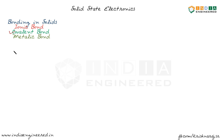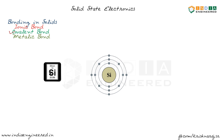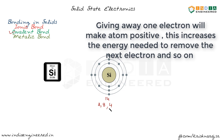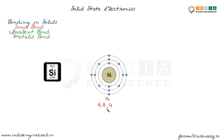Let's talk about covalent bonds using a simple example: silicon. Silicon's atomic number is 14 and its electronic configuration is 2, 8, 4 — so it has 4 valence electrons. Giving away all 4 valence electrons is not a feasible task. Instead, when silicon forms a molecule, it shares its outermost electrons with four other silicon atoms. In a covalent bond, it is not the donation of electrons but the sharing of electrons.